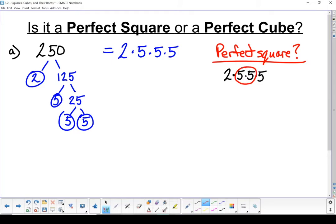I've got a pair of fives, but I don't have any other pairs. That two and that five, I've got some leftovers. Because I have those leftovers, it is not a perfect square.